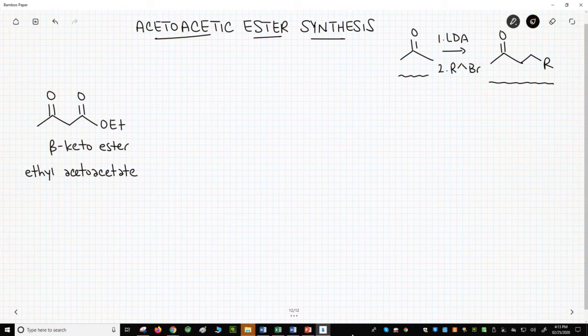Well, they used the product from the Claisen condensation. To the left is our Claisen product. This is a beta-ketoester. Its proper name is ethyl acetoacetate. How will this help us make an alkylated ketone? Let's see.